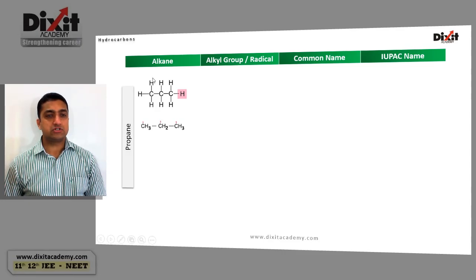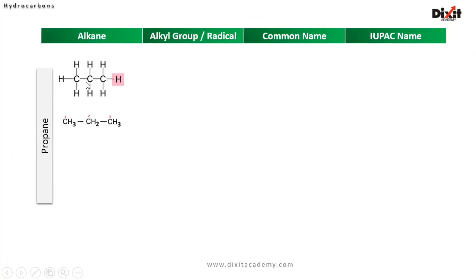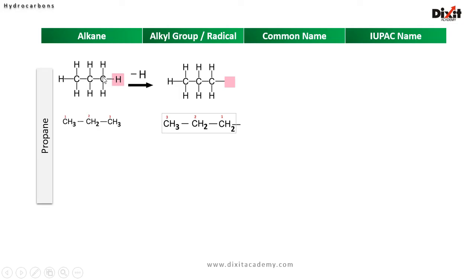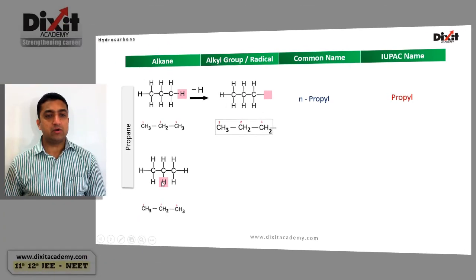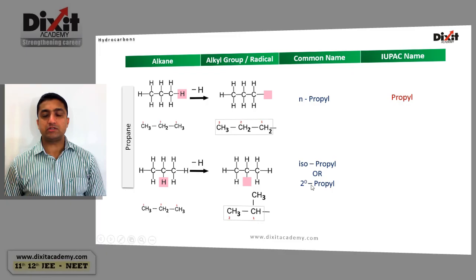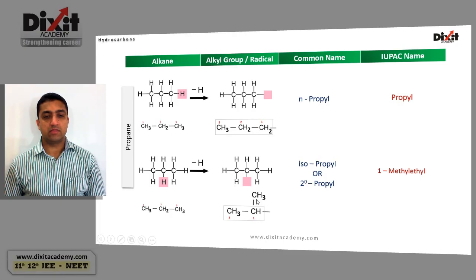Consider propane, with structural formula CH3CH2CH3. The terminal carbon atoms are primary and the middle carbon atom is secondary. If we remove a hydrogen from a primary carbon atom, we get the CH2CH2CH3 group, called n-propyl in the common system and propyl in the IUPAC system. If we remove a hydrogen from the secondary carbon atom, we get the isopropyl or secondary propyl group, called 1-methylethyl in the IUPAC system.